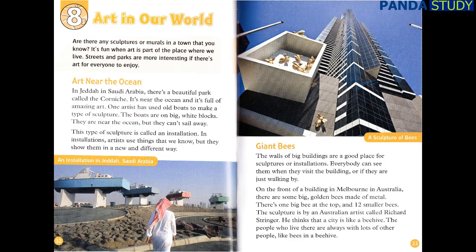Are there any sculptures or murals in a town that you know? It's fun when art is part of the place where we live. Streets and parks are more interesting if there's art for everyone to enjoy. In Jeddah in Saudi Arabia, there's a beautiful park called the Corniche. It's near the ocean, and it's full of amazing art. One artist has used old boats to make a type of sculpture — the boats are on big white blocks, near the ocean, but they can't sail away. This type of sculpture is called an installation. In installations, artists use things that we know, but they show them in a new and different way.